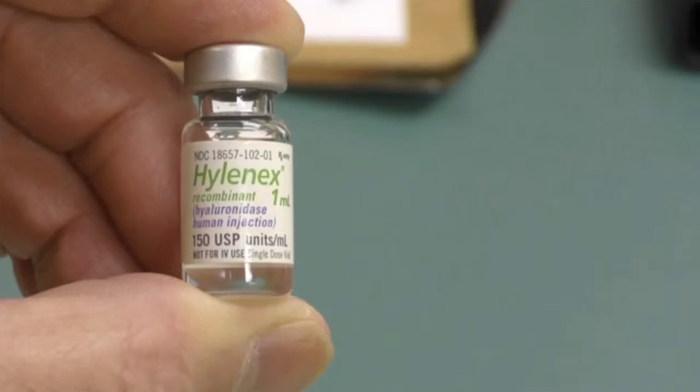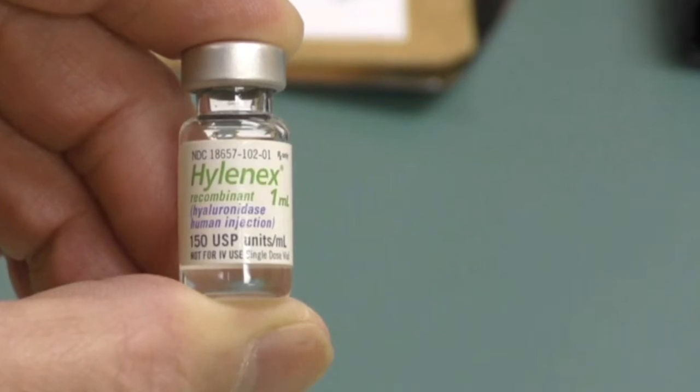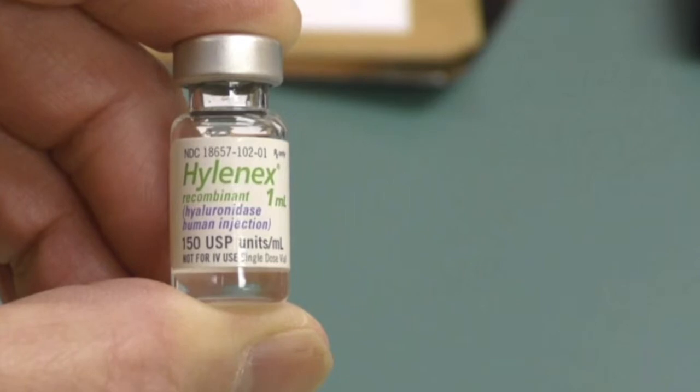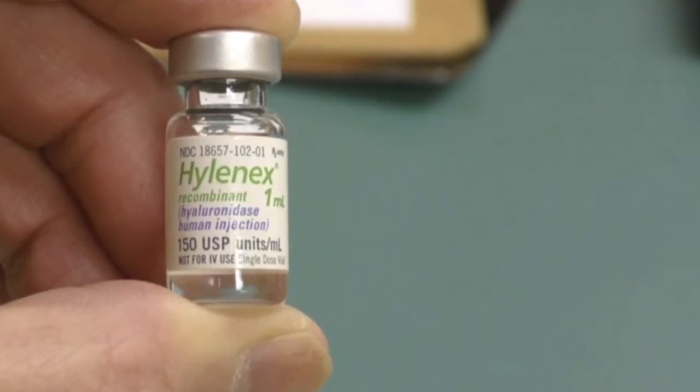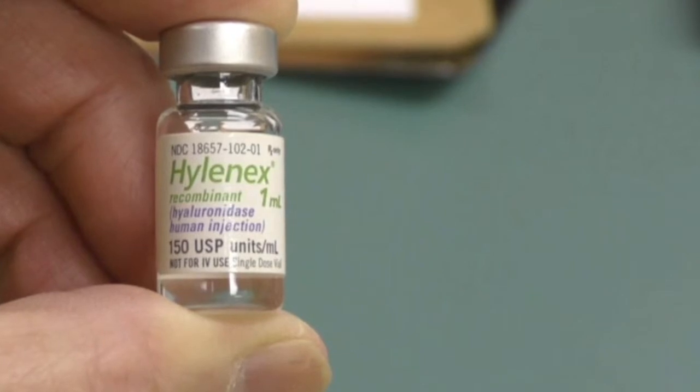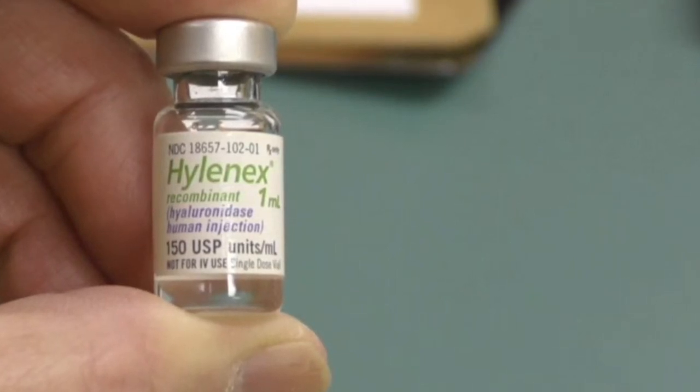So this is a vial of hyaluronidase. This brand happens to be Hylinex, but there are also other brands like Vitrace. This hyaluronidase will dissolve hyaluronic acid products.